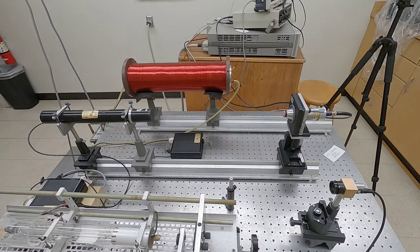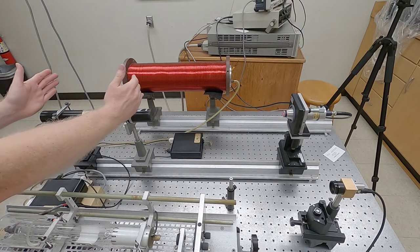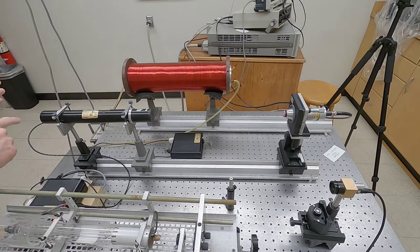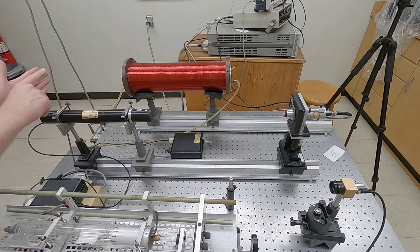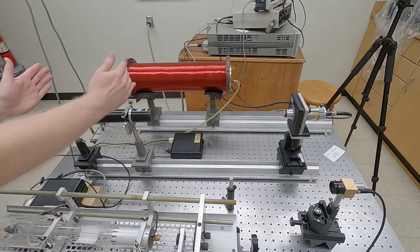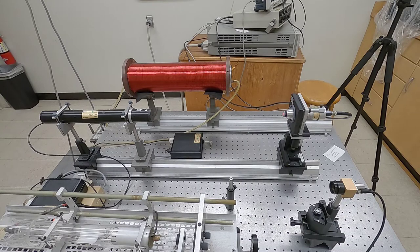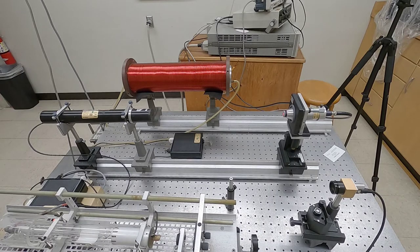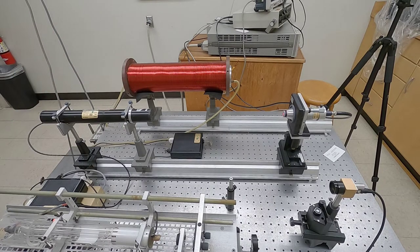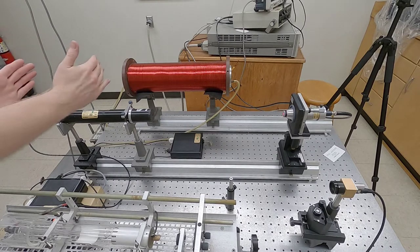So in order to get the lasing effect, there need to be an integer number of wavelengths for the return trip between this mirror, going back, bouncing off the back mirror, going forward. And for the wavelength of the helium neon laser, about 633 nanometers, that means that there are about a million wavelengths that make up that round trip path. And so we're going to look at the longitudinal modes of that laser.